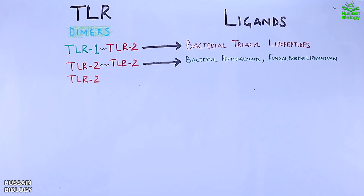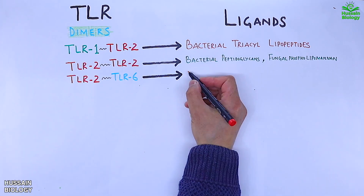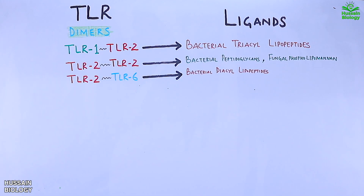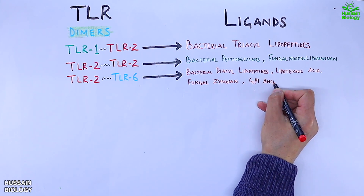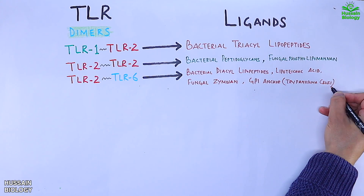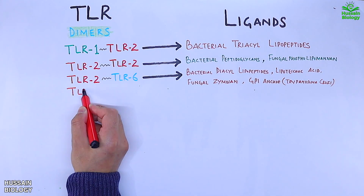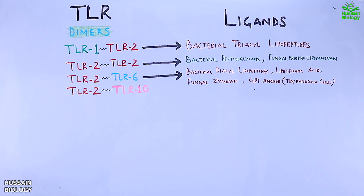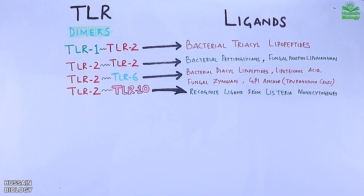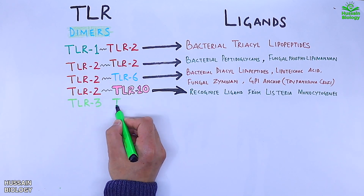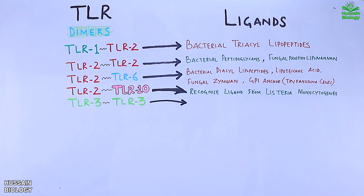Third, the TLR2/TLR6 heterodimer binds ligands in the form of bacterial diacyl lipopeptides, lipoteichoic acid, fungal zymosan, and GPI anchor from Trypanosoma cruzi. The TLR2/TLR10 heterodimer recognizes a ligand from Listeria monocytogenes. The TLR3/TLR3 homodimer recognizes viral double-stranded RNA (dsRNA).